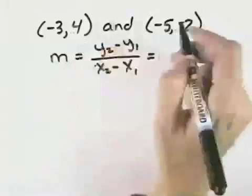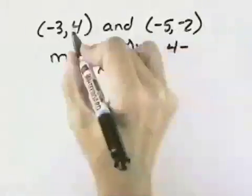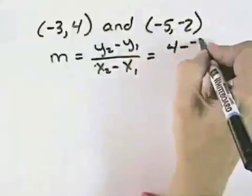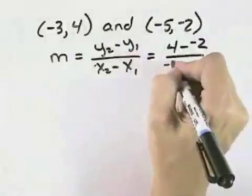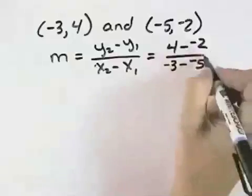So if I chose 4 as my first y value, then I'd have 4 minus a negative 2. And for x, I'd need to start with the negative 3 as my first x value, and subtract the negative 5 from that.